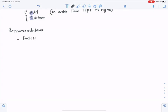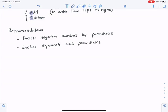This might be helpful for some of you in the future. Enclose negative numbers with parentheses. Enclose exponents with parentheses. What I mean to say is instead of simply writing it as negative five, the better way is to write it as negative five within parentheses.